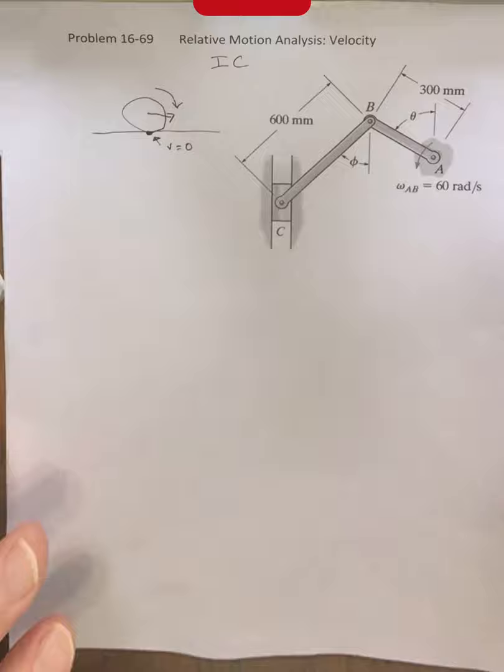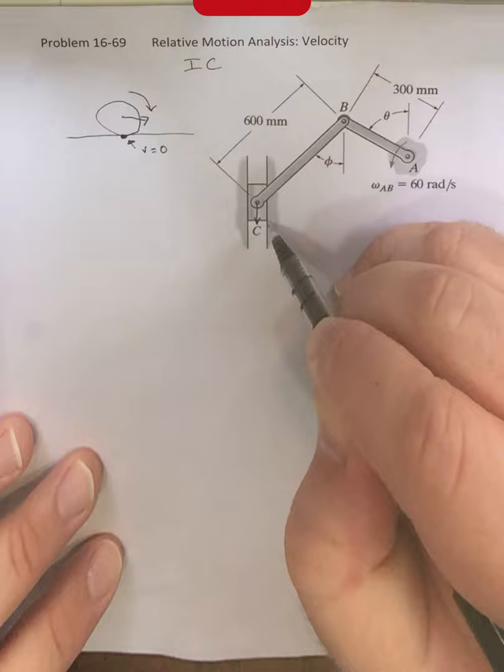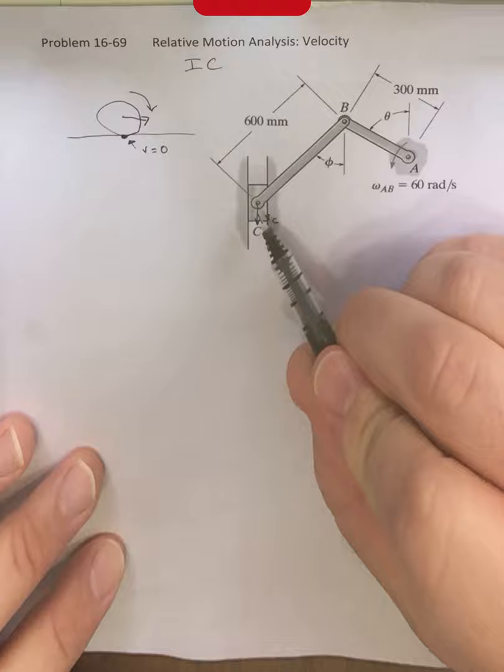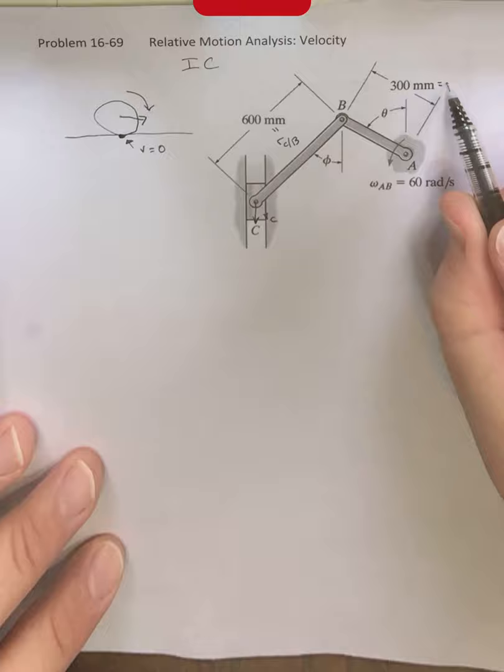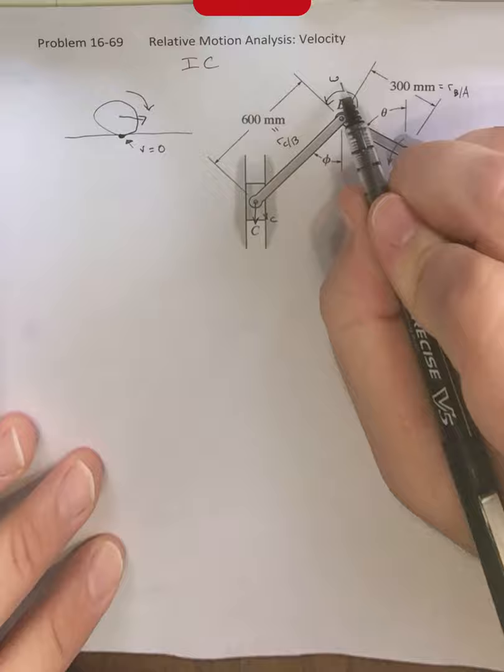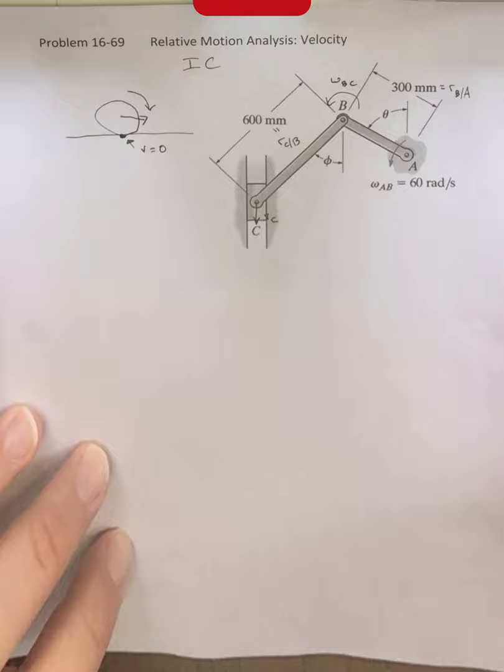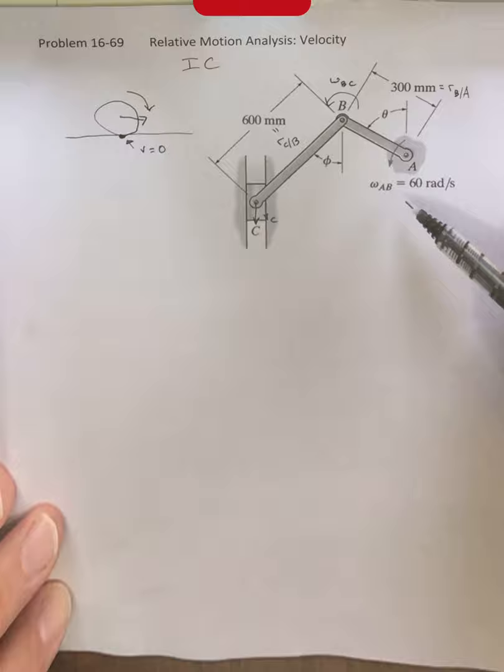Ergo, continuing onward, we have the velocity of this point here that we want to try to find. We have this link BC that has a, we'll call that radius RC/B. We have the 300 millimeters that is equal to RB/A. Again, we had this omega BC that was representing the rotation of link BC about point B, and then we have this fixed point A and omega AB that is equal to 60 radians per second.